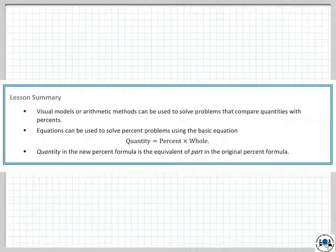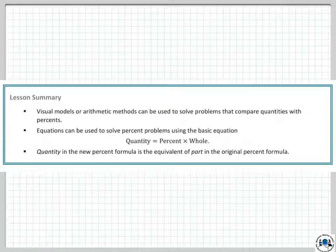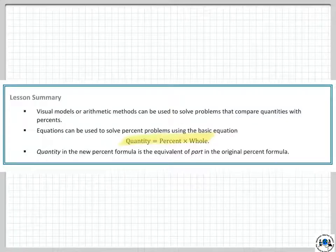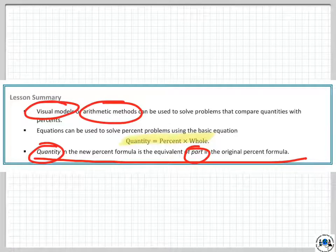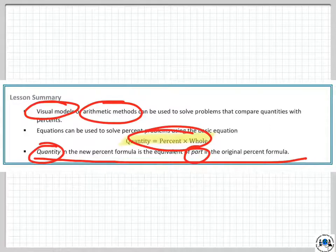Lesson summary: visual models and arithmetic models can be used to solve problems that compare quantities with percents. Equations can be used using the basic formula quantity equals percent times whole — where 'quantity' replaces 'part' from the original formula. We have visual, arithmetic, and algebraic models, and checking work using one strategy against another is very helpful. See you in Lesson 5.